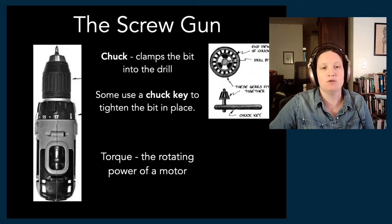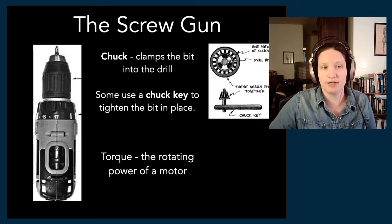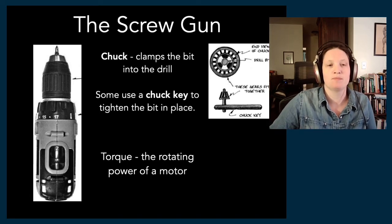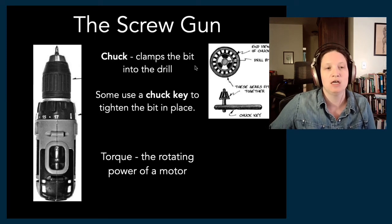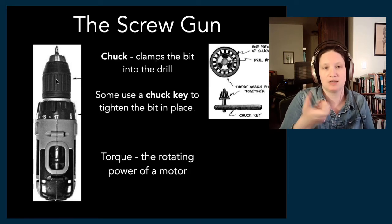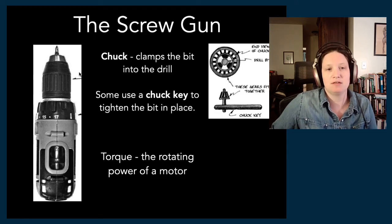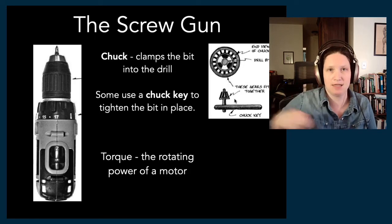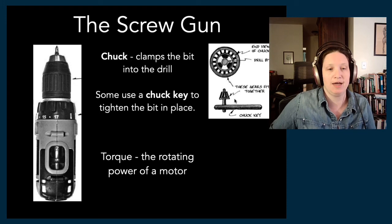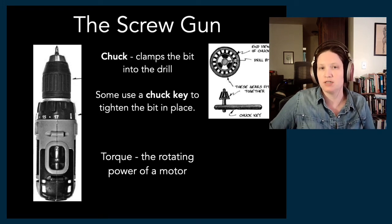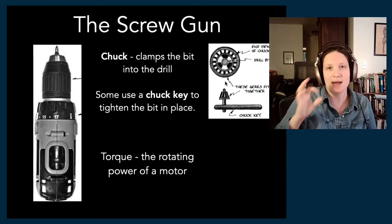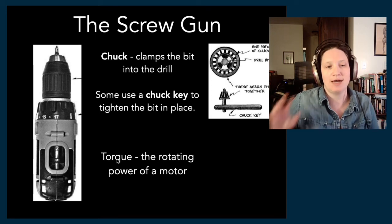When you're looking at a screw gun — this is a drill driver, so it does both drilling and screw driving — it has a couple of parts you want to understand. One of them is the chuck, this part right here. You hold it and it spins around and locks in, clamping the bit into the drill. The bit is the screw driving component; the chuck is what holds it in place. On a cordless drill, that typically won't require a chuck key — you can do it with your hand. On some higher powered drills you do have a chuck key that additionally locks the bit into place.